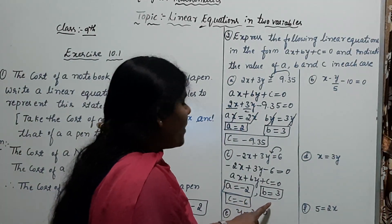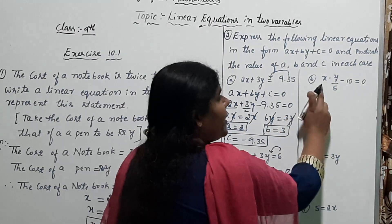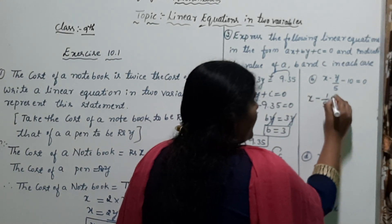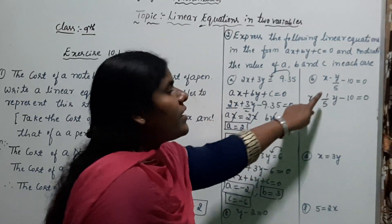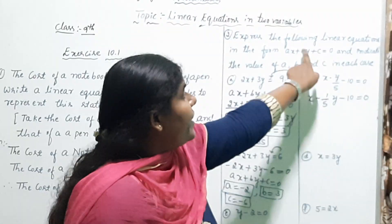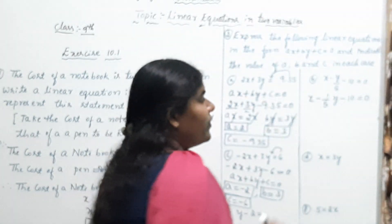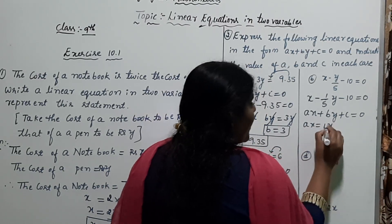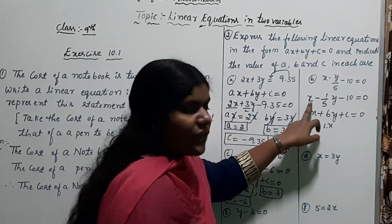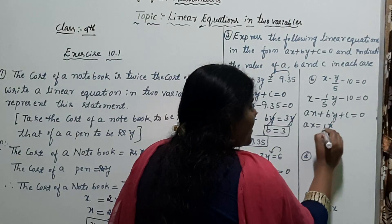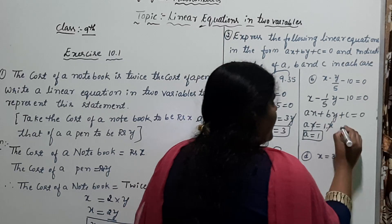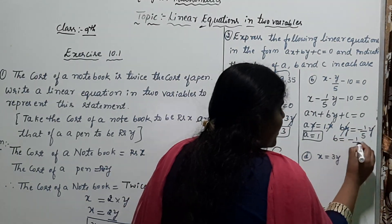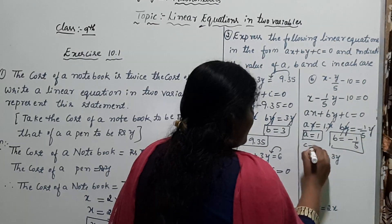The next problem is x − y/5 − 10 = 0. This is already in the form equal to zero with all three terms present. Comparing with AX + BY + C = 0: the coefficient of x gives A = 1, the coefficient of y gives B = −1/5, and the constant term gives C = −10.